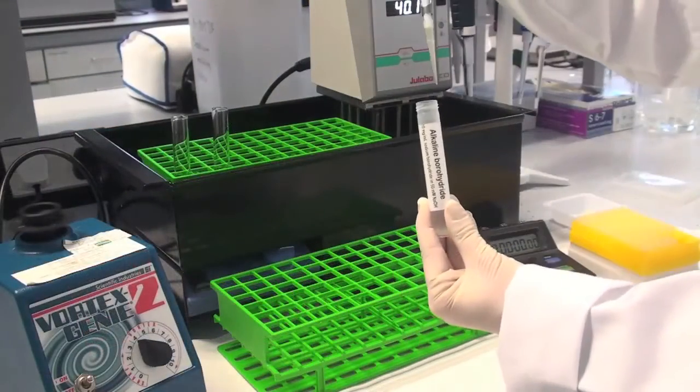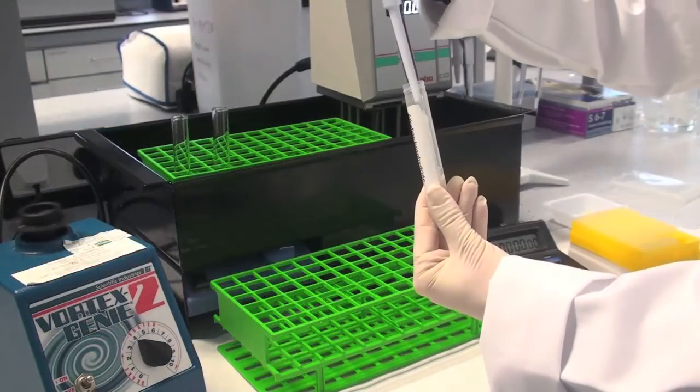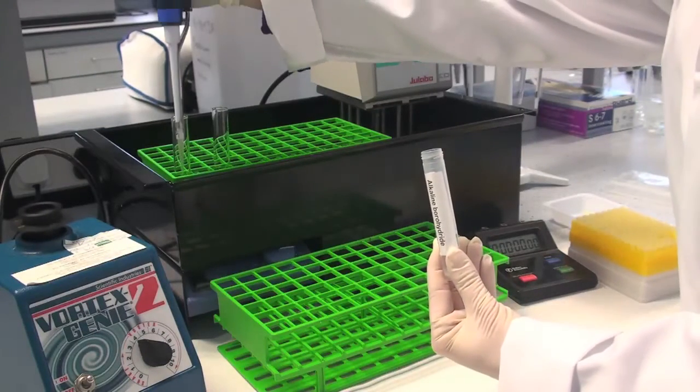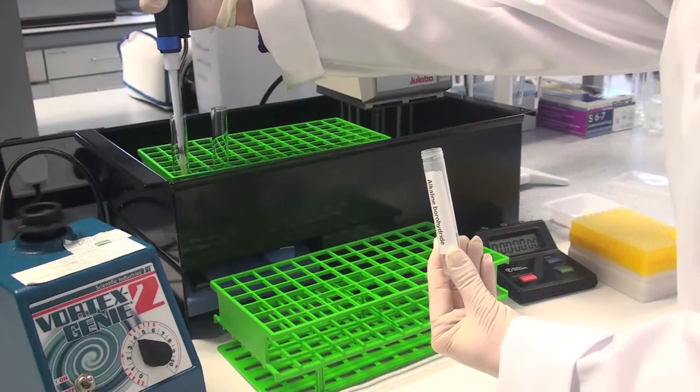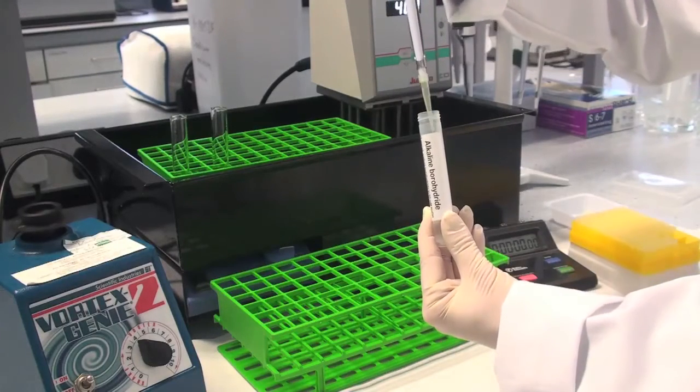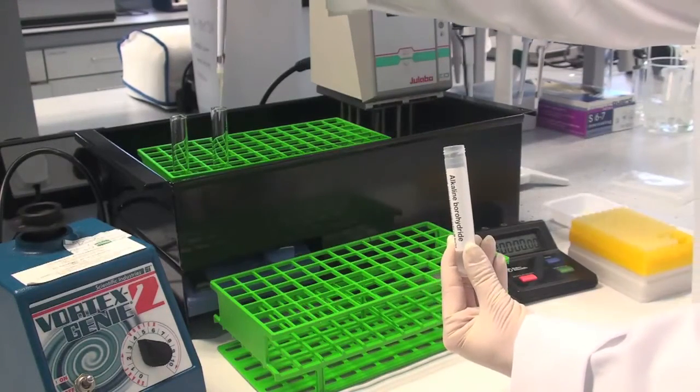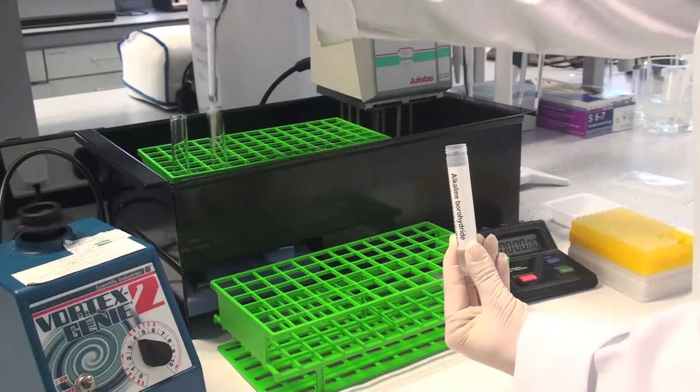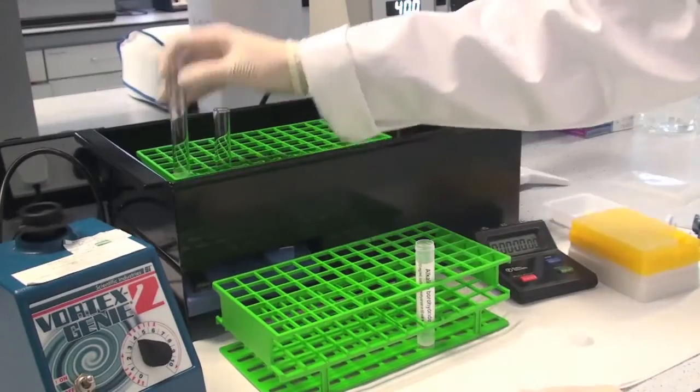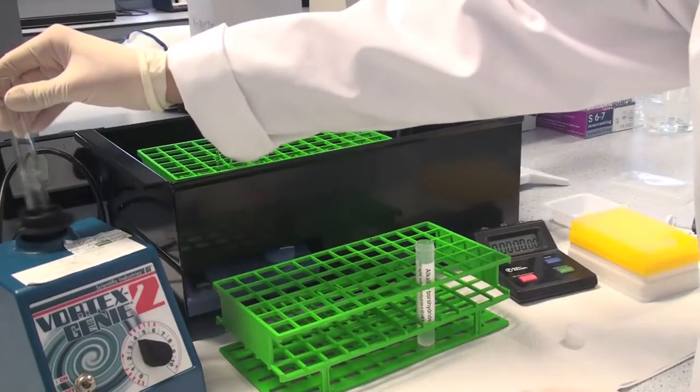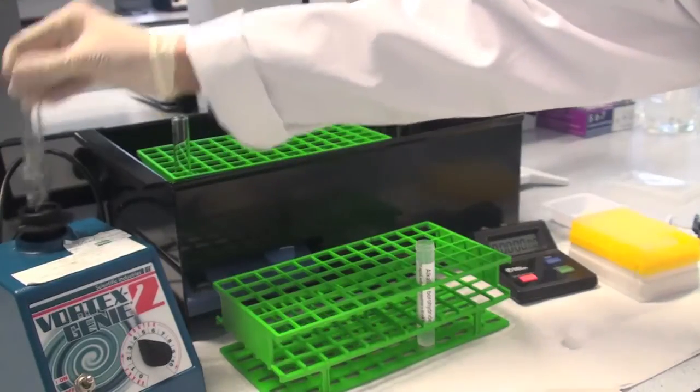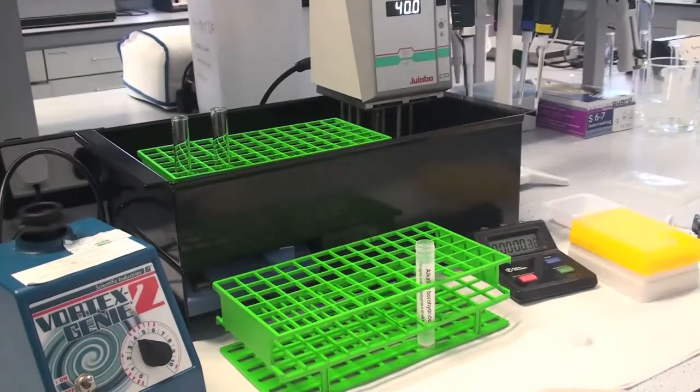Add 0.2 ml of reagent 3 alkaline borohydride solution to the tube. Stir the tubes vigorously on a vortex mixer and incubate them at 40 degrees centigrade for 30 minutes. This will affect the complete reduction of reducing sugars to sugar alcohols.